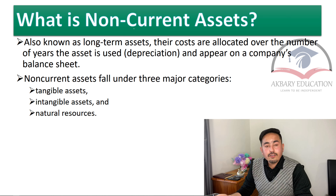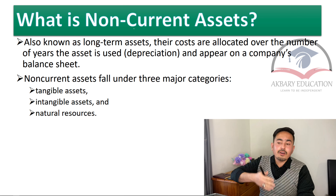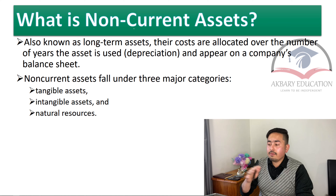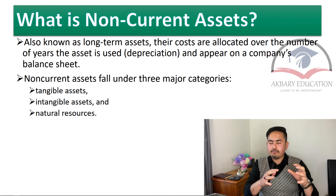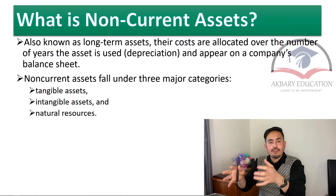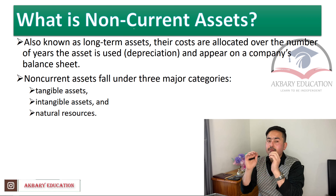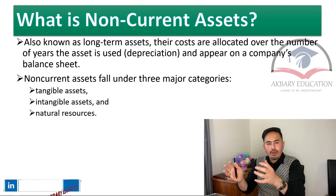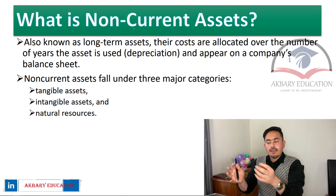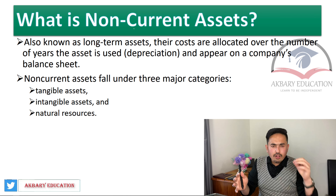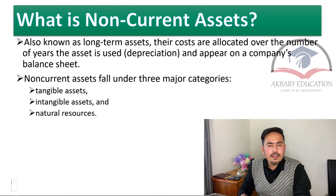Non-current assets are also known as long-term assets or fixed assets. Their costs are allocated over the number of years the asset is used — this is called depreciation — and they appear on the company's balance sheet. For example, when you purchase a computer and plan to use it for five years, you record it in the balance sheet as a non-current asset. A portion of its value used each year comes inside the income statement as an expense called depreciation.